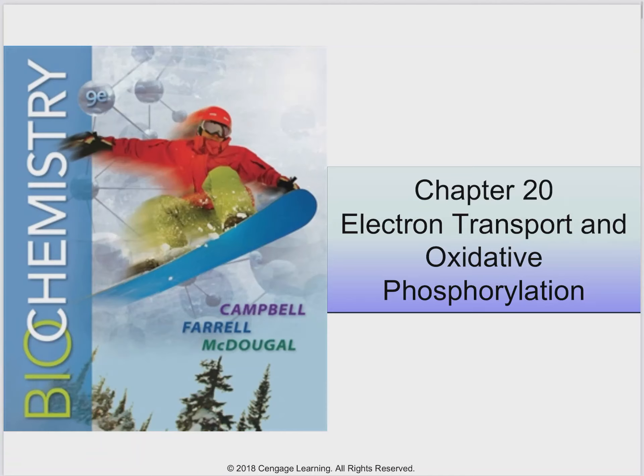Welcome back to another video lecture. This time we're finally going to get to see where that ATP comes from — Chapter 20. We looked at glycolysis, saw some substrate-level ATP made, and some NADH electron carriers. We looked at the citric acid cycle in the last chapter, and saw some more electron carriers as well as some GTP made, which is an ATP equivalent.